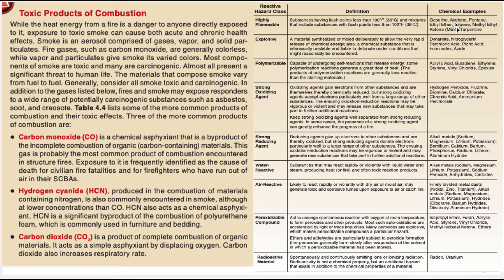Remember these reactive classes: flammable/explosive, polymerization, oxidizing or reducing agent, water-reactive, air-reactive, and radioactive. Many examples will make sense to you — VOCs such as volatile organic compounds, ketones, turpentines, xylenes. Then there are materials that undergo polymerization, like vinyl chloride, styrene, or epoxies. Reducing agents are alkali metals, which tend to also be water-reactive. Lithium is a reactive metal. And then you have peroxide agents, placing you in the 5.2 UN hazard category.